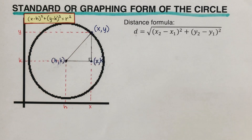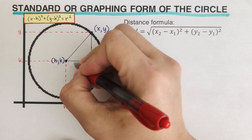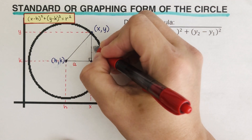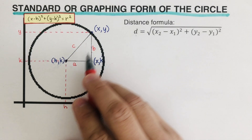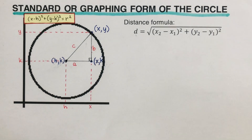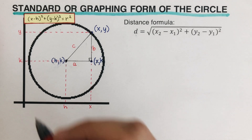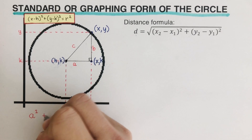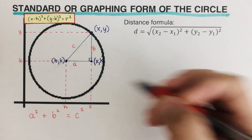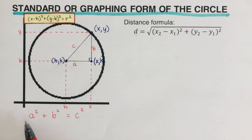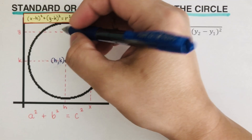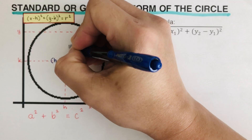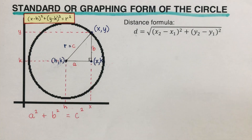Now we label the parts of the right triangle. This side is labeled a, this one is labeled b — those are the two legs — and the hypotenuse is labeled c. To solve for c we use the Pythagorean theorem: a squared plus b squared equals c squared. In this problem, c is represented as r, the radius.